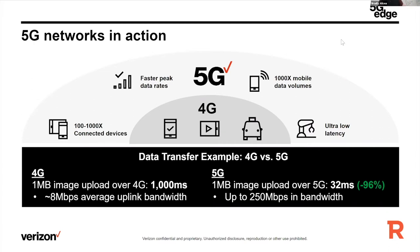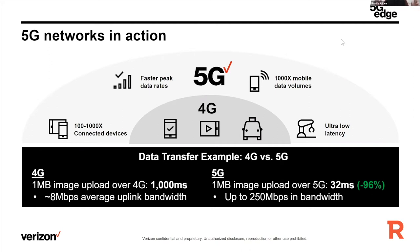But with 5G, without altering a single line of code, here's what can now happen. Same 1 megabyte image, but up to a 250 megabit per second uplink. If we do that same division, that's 32 milliseconds. So 5G, in this example, could save you up to 96% of your latency budget without altering a single line of code. What that means is 5G is a huge opportunity to take existing workflows and make them more performant — not just because it's faster by way of latency, but also because of the bandwidth of that wireless transmission link.